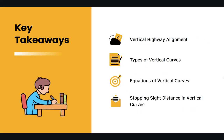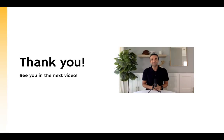To wrap up this chapter, we talked about vertical highway alignment and its elements, how to estimate different components of vertical curves including sag and crest curves, and what criteria we need to consider for stopping sight distance in vertical curves. That's it for this video and I will see you in the next one.